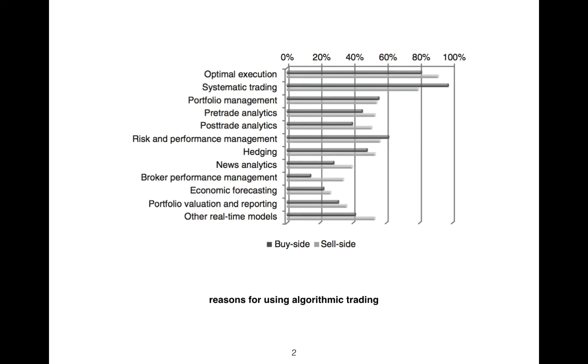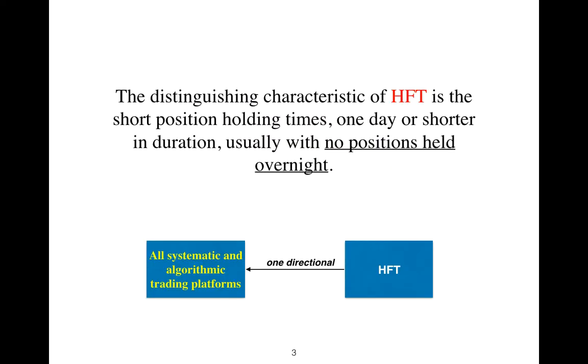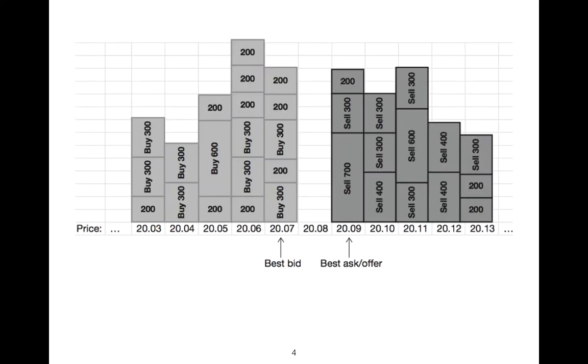The distinguishing characteristic of high-frequency trading is short position holding times—one day or shorter in duration, usually with no positions held overnight. All high-frequency trading are systematic and algorithmic trading platforms, but not all systematic and algorithmic trading platforms are high-frequency trading. There is a one-directional relationship.